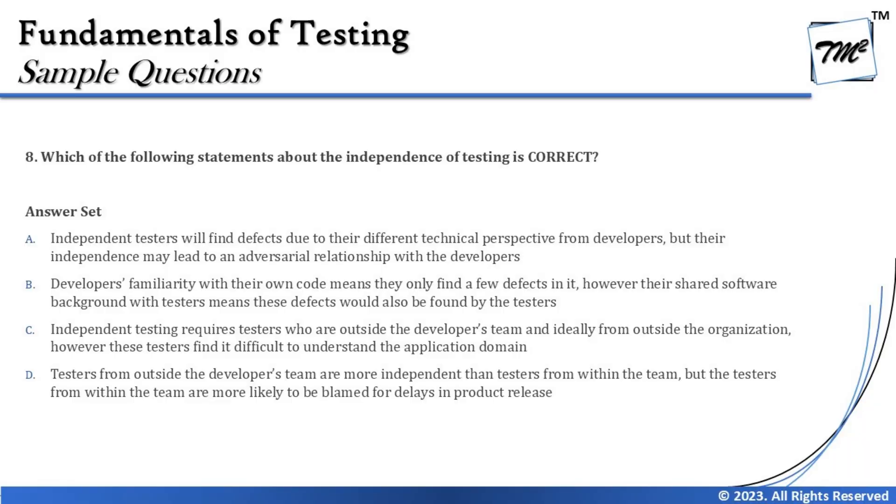Option C says independent testing requires testers from outside the developers' team, ideally from outside the organization, but these testers find it difficult to understand the application domain. This isn't necessarily true — you outsource testing precisely because the external team is skilled and domain-aware. You reach out to them because they are capable and knowledgeable. Independent testing may lack collaboration, but it doesn't mean testers don't understand the domain, so Option C is also not the right answer.